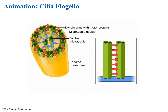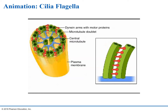Flagella — singular flagellum — and cilia — singular cilium — are microtubular structures that extend outside some cells and assist in moving the cell or the cell's surroundings. Flagella are much longer than cilia. When a cell has cilia, their number is large, whereas a cell will have few flagella or a single flagellum. Many protists have cilia, and the sperm of many plants and animals have flagella. Flagella and cilia are assembled from tubulin subunits organized in a circular arrangement of nine pairs of microtubules attached to a central pair.